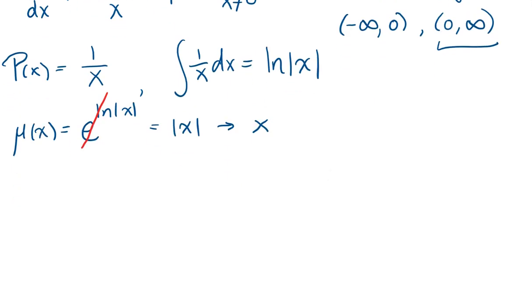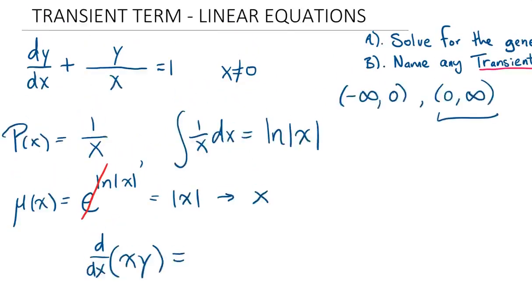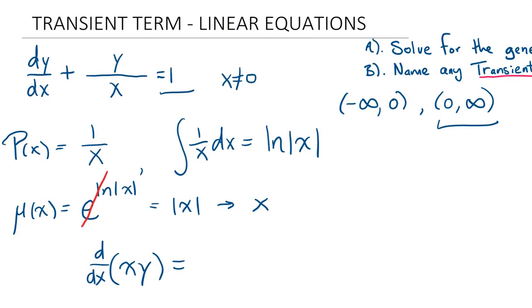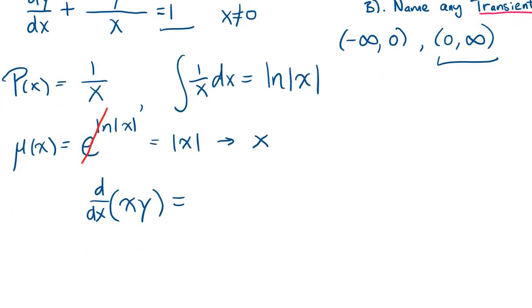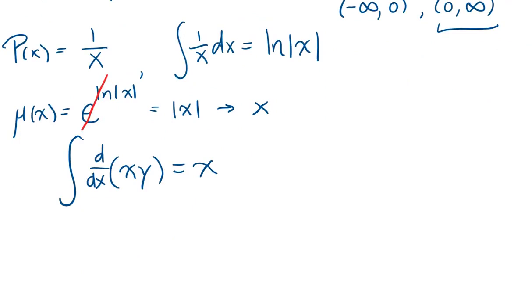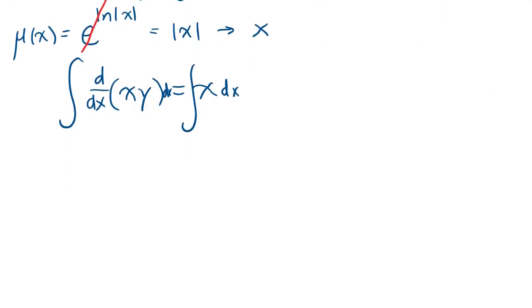So our integrating factor is x. We have x times y, and the derivative with respect to x of this is equal to x times the right-hand side of our differential equation, which is just x. Now we integrate both sides with respect to x, so integral dx, and we get...